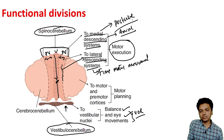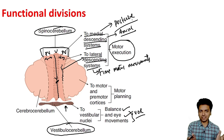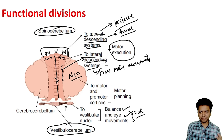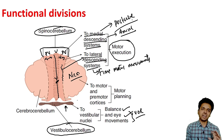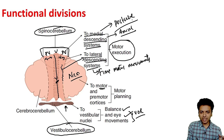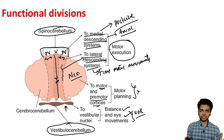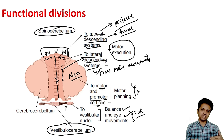The remaining part of the cerebellum is called the neocerebellum or cerebrocerebellum, because it has connections with the motor and premotor cortices. Its main function is helping in motor planning. Phylogenetically, the vestibulocerebellum is the oldest part and the neocerebellum is the newest part.